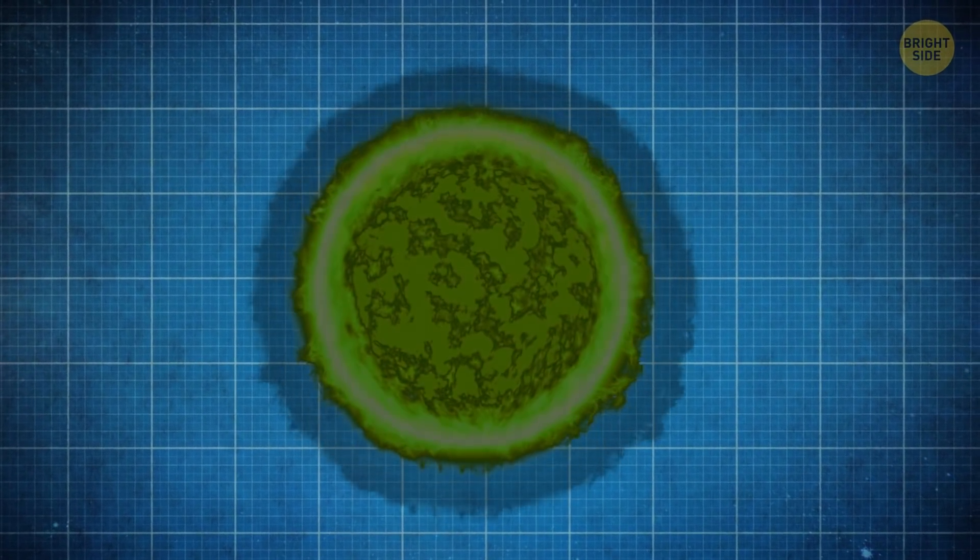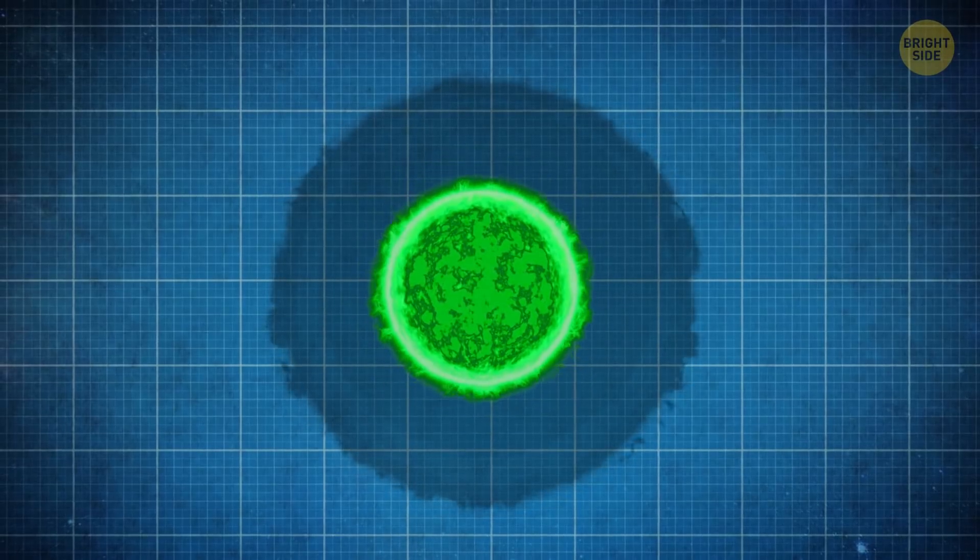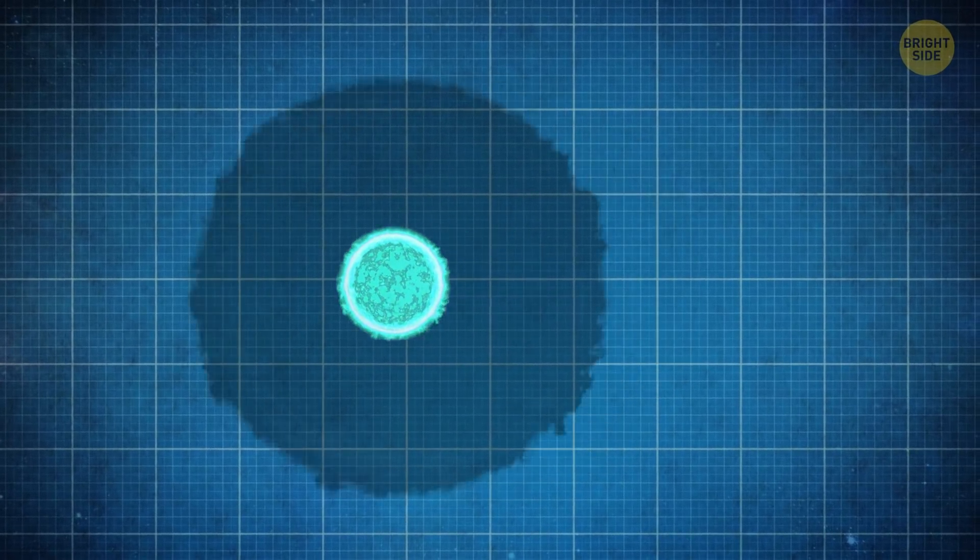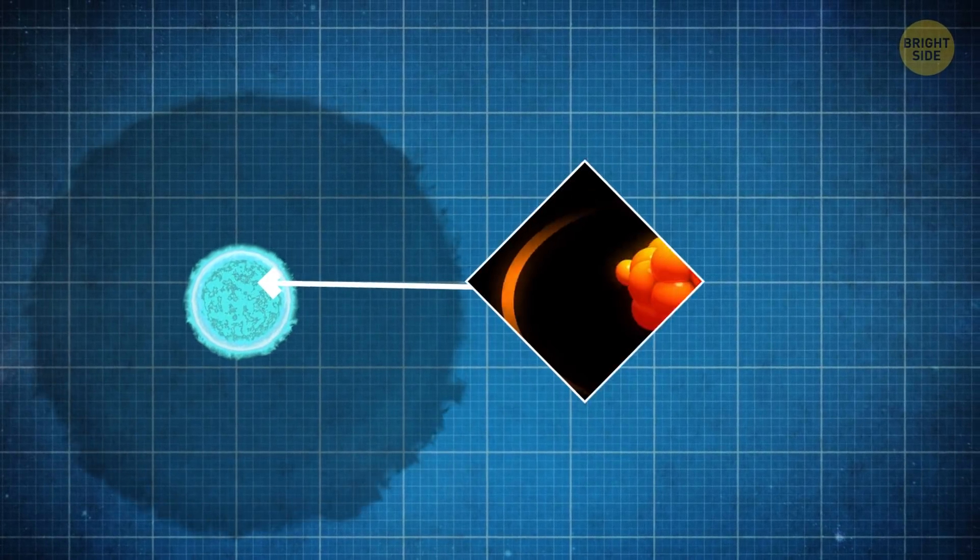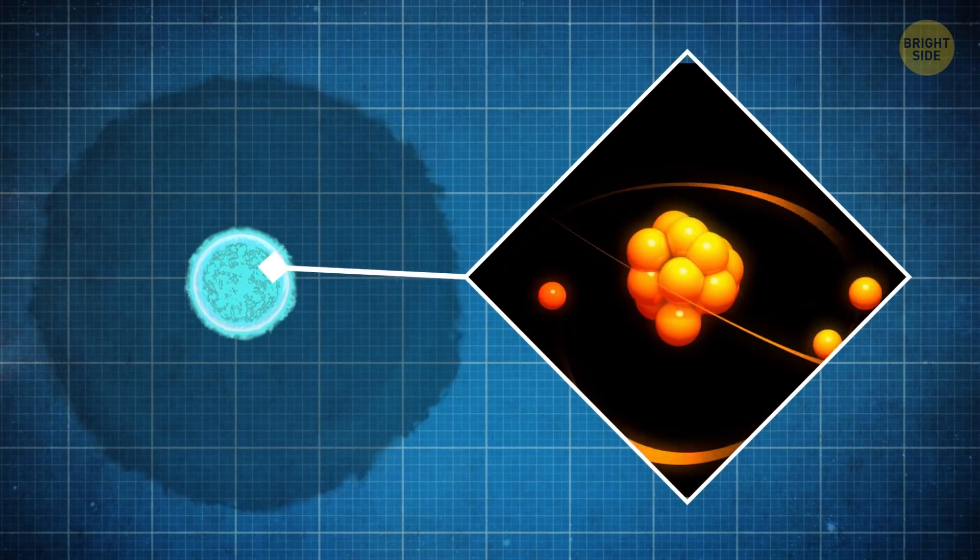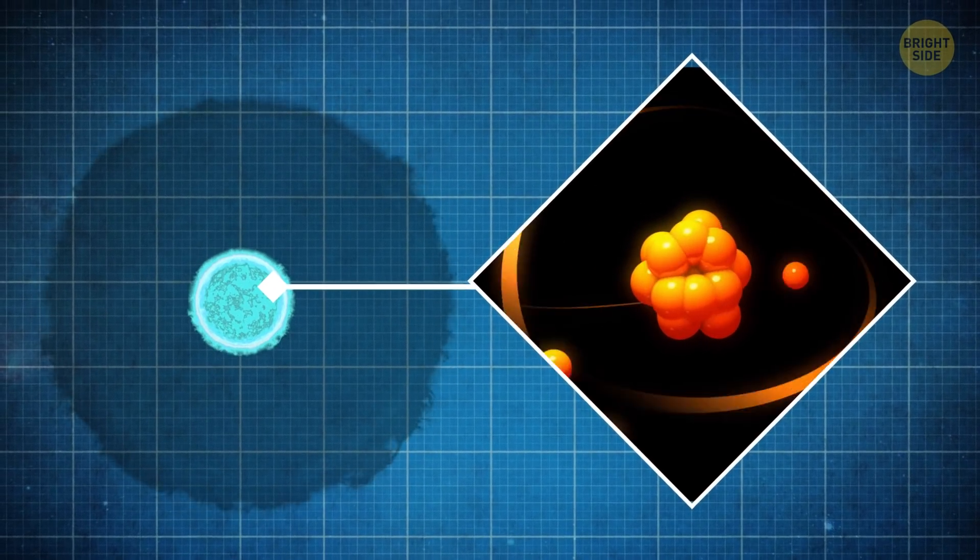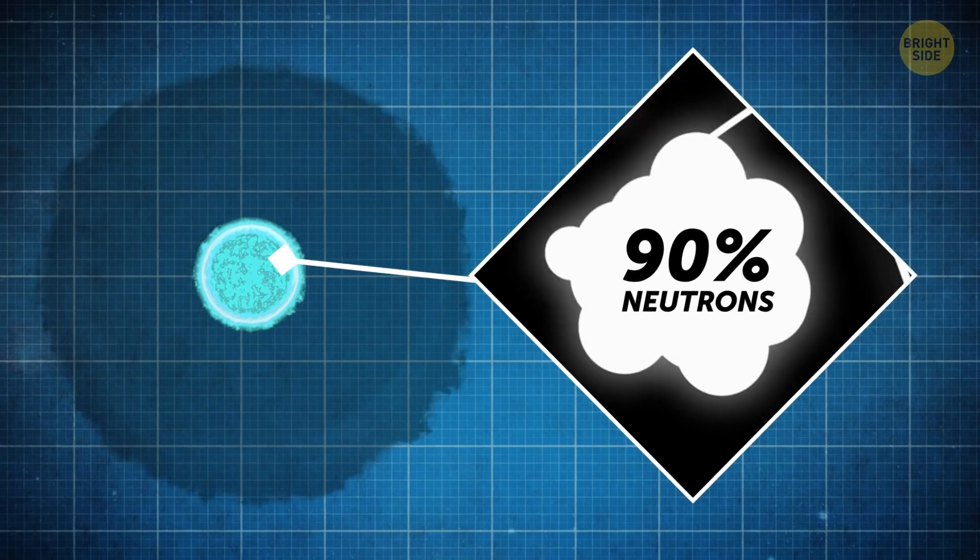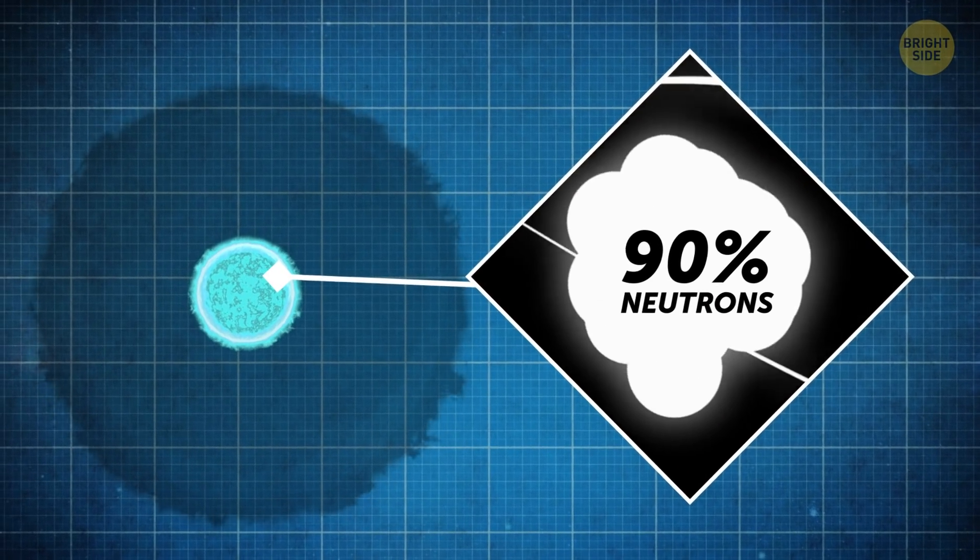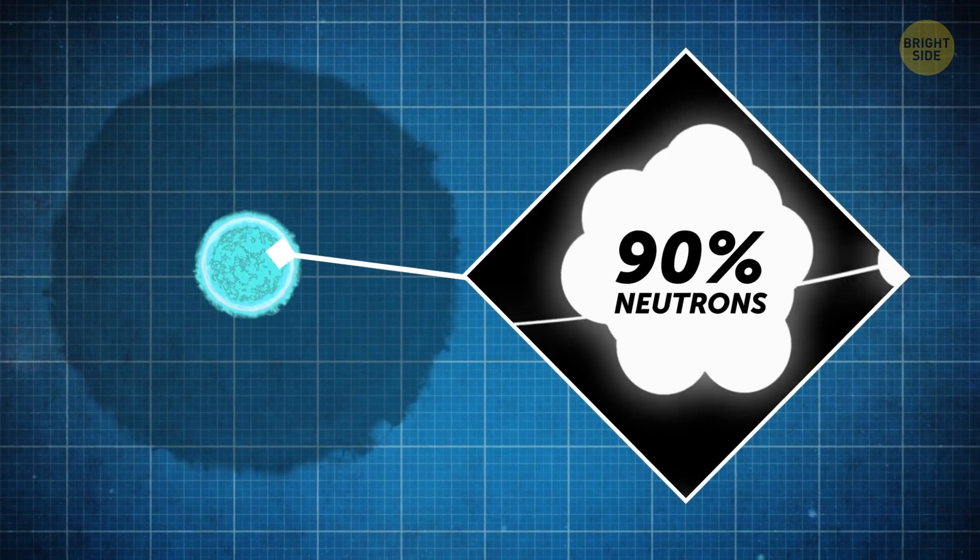But that's not the end of the star. Even without the outer layers, its core keeps collapsing. At one moment, the pressure inside becomes so high that electrons and protons virtually melt into each other, resulting in a mass that consists of 90% neutrons. It means that the thing just can't be squashed any tighter.